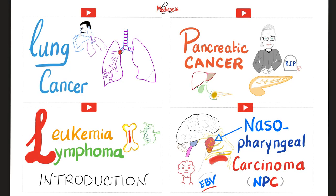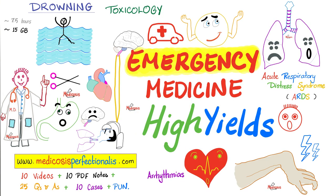Today, we did not talk about cancer, because hematoma is not a cancer. If you want to learn about cancer, I have many videos on this subject — you'll find them in my oncology playlist, such as lung cancer, pancreatic cancer, leukemias, lymphomas, multiple myeloma, and nasopharyngeal carcinoma. Tumors are anything that ends in 'oma', except Oklahoma. Check out my Surgery High Yields course and my Obstetrics Gynecology course on my website.